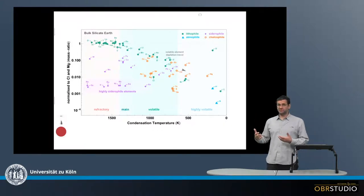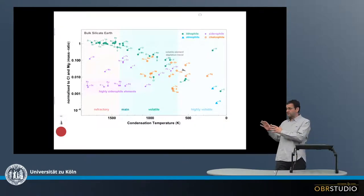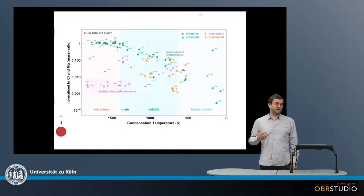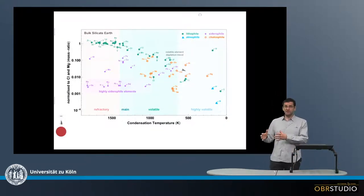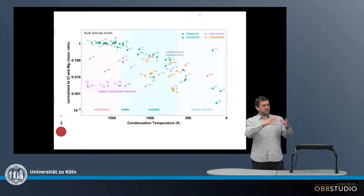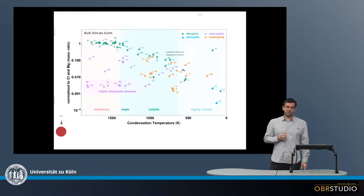This plot shows the composition of the bulk silicate Earth and tries to explain a number of characteristics we observe. First, with silicate Earth, we mean essentially the composition of the entire Earth minus the metallic core.